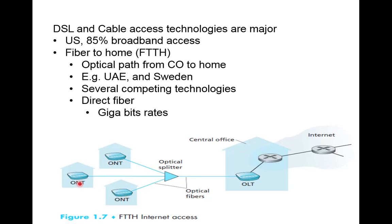From the junction point, dedicated fiber optics run to each home. An Optical Network Terminator (ONT) device is used at each home. Data from all homes is multiplexed onto the single shared link toward the central office, and incoming data is split toward the correct home. This technology supports up to gigabits per second and its usage has increased by over 30 percent.